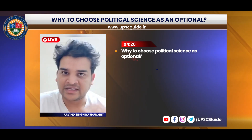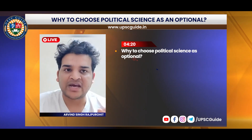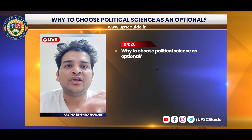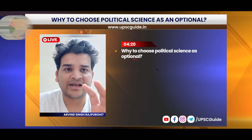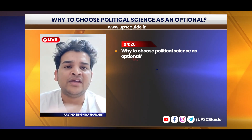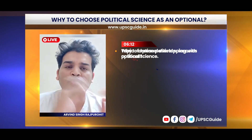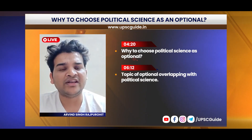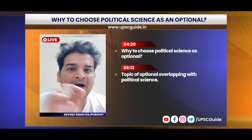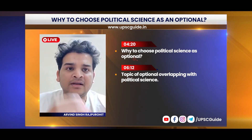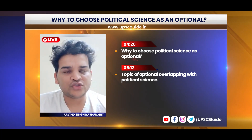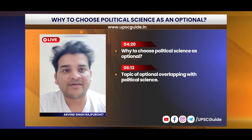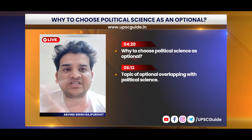In GS1, there are parts that match political science - for example, geography as a part of political science context. Even in GS1, some parts match the history portion. You have to learn modern history anyway. Then there are social issues like communalism, urbanization, and local self-government, which match GS1 as well.